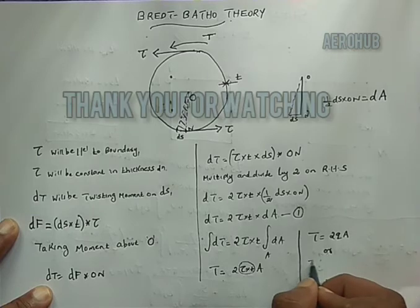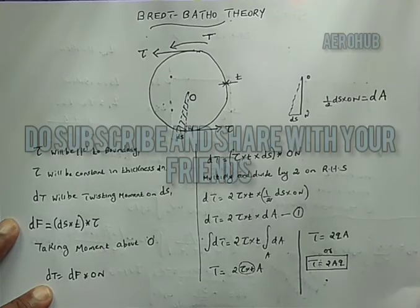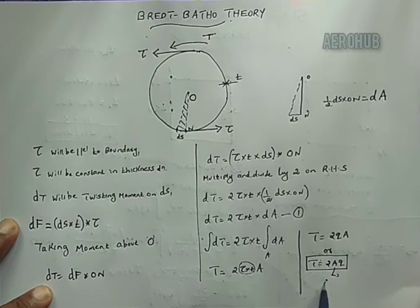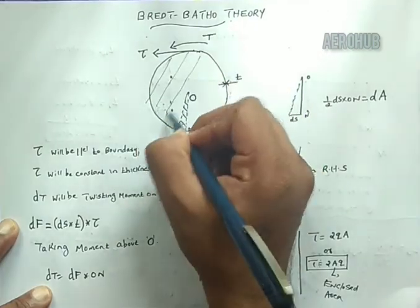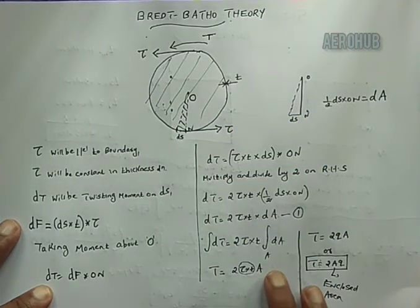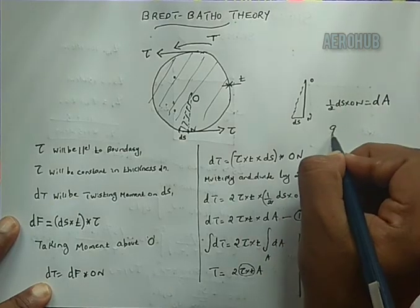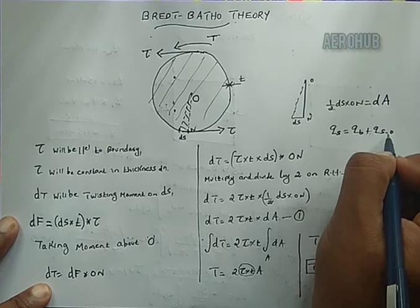Now, tau times t is nothing but the shear flow q. So the final equation becomes T = 2 · q · A, or T = 2qA. This is the famous Bredt-Batho formula — the relationship between the applied torque T and the shear flow q, where A is the enclosed area of the entire cross-section.